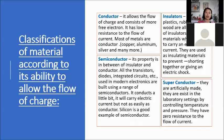Insulators — glass, most plastics, rubber, dry wood, and paper — refuse to carry an electric current. They are used as insulating materials to prevent shorting together or giving electric shocks. That is why wiring has a plastic coating — to prevent short circuits. Superconductors are artificially made in laboratory settings by controlling temperature and pressure; they have zero resistance to the flow of current.